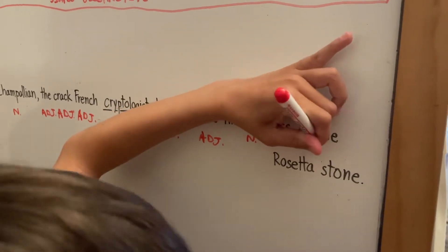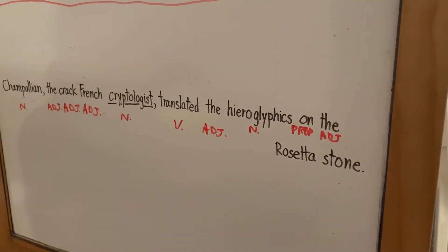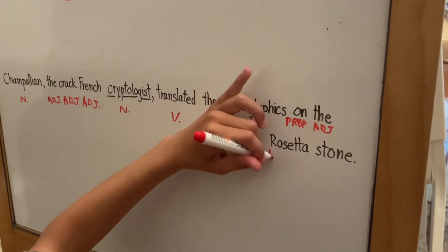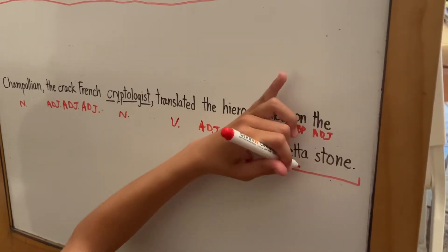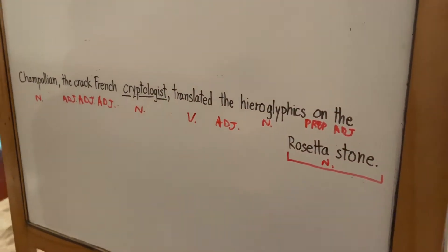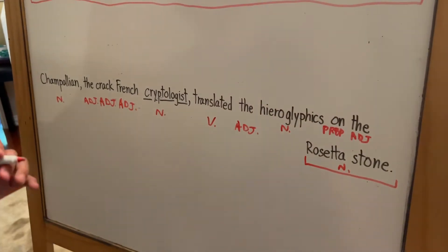'The'—an adjective once again. And Rosetta Stone is a compound noun because it's a complete thing in and of itself. Okay, we've completed parts of speech for this sentence.